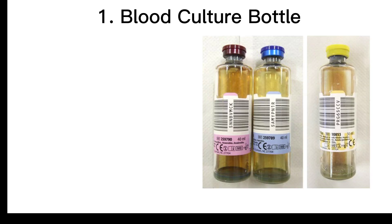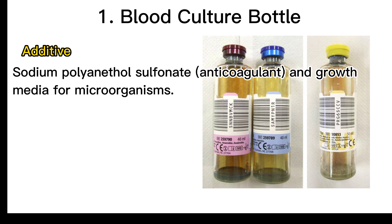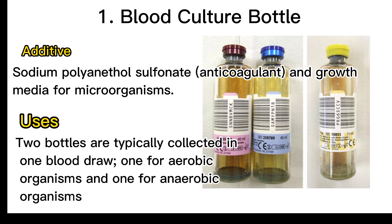Types of Blood Collection — Blood Culture Bottle. Additive: Sodium polyanethol sulfonate (SPS), an anticoagulant, and growth media for microorganisms. Uses: Two bottles are typically collected in one blood draw — one for aerobic organisms and one for anaerobic organisms.